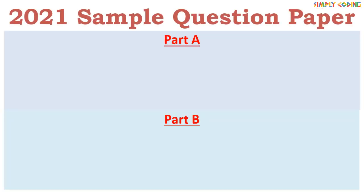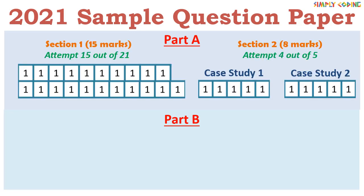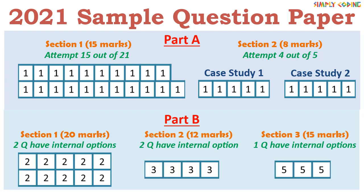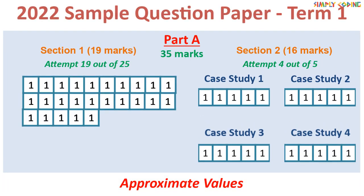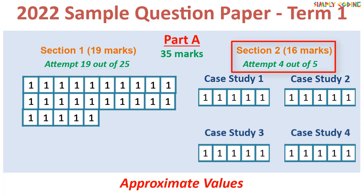Last year CBSE changed the question paper format to two parts: Part A with one-mark MCQs including case study-based questions, and Part B with descriptive short and long answer questions. For Term 1, Part B is completely gone and the paper will have 35 marks of Part A only. There will be some open MCQ questions where you can choose which questions to attempt, followed by four to five case studies where you can attempt four out of five questions each.